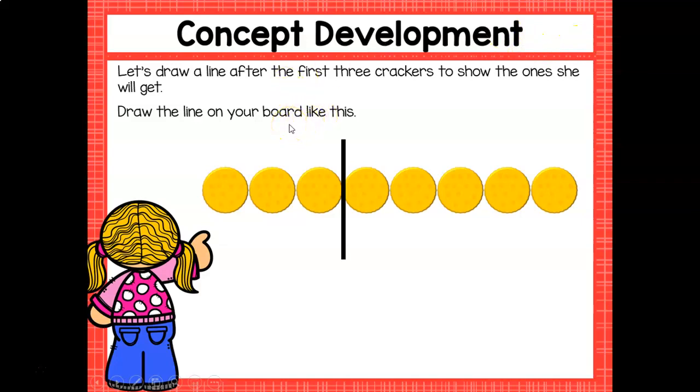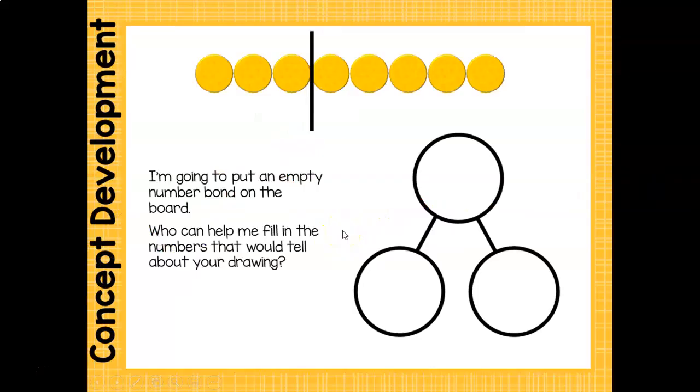So we're going to create a number bond. So get your number bonds ready. It should look something like this right here. A circle, and then one line with another circle, and then another line with our other circle for our other part. So first, I want to start with our whole. Let's count how many we have all together. Because remember, our whole is how many we have all together. One, two, three, four, five, six, seven, eight. Very good.